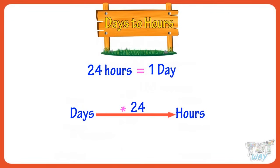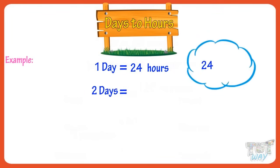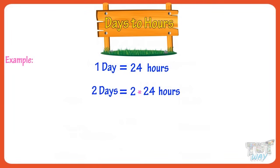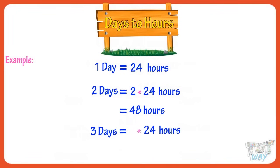Let's see some examples. One day equals 24 hours. So two days will be 24 plus 24, or 24 multiplied by 2, equals 48 hours. Now let's calculate the number of hours in three days. Three days equals 24 plus 24 plus 24, or 24 multiplied by 3, equals 72 hours.